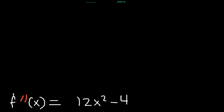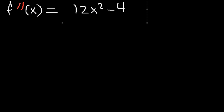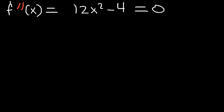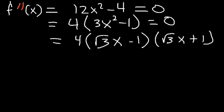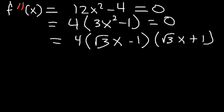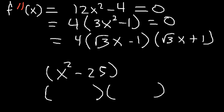Set the second derivative equal to zero and factor out 4: 4(3x² - 1) = 0. Using the difference of perfect squares, 3x² - 1 = (√3·x - 1)(√3·x + 1). For example, x² - 25 = (x - 5)(x + 5) by the same technique — you take the square root of each term and make one factor positive and the other negative.